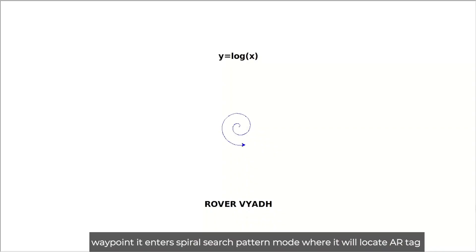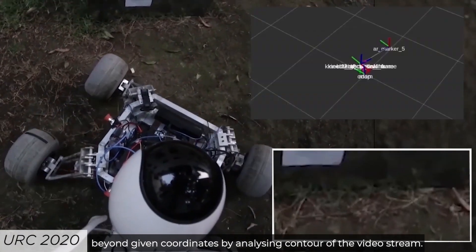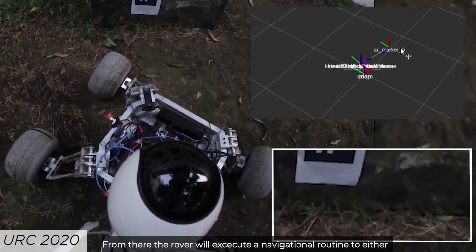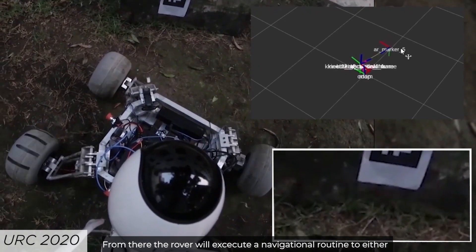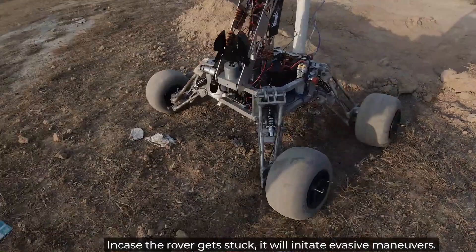Once it reaches the waypoint, it enters spiral search pattern mode where the rover will locate AR tag beyond given coordinate by analyzing contour of the video stream. From there, the rover will execute a navigational routine to either approach or pass through the gate. In case the rover gets stuck, it will initiate evasive maneuver.